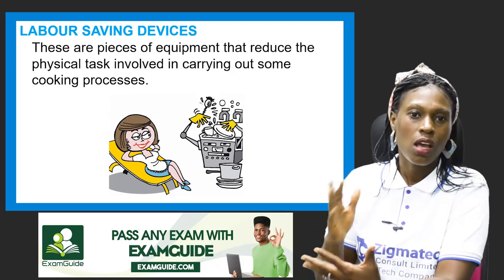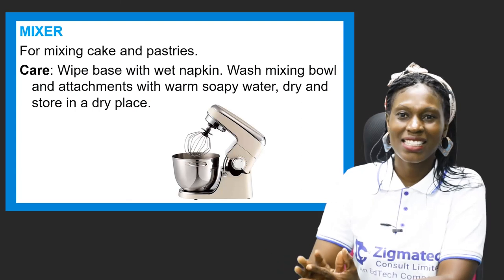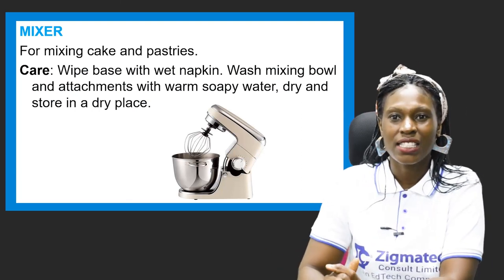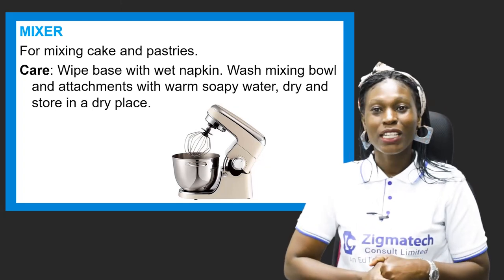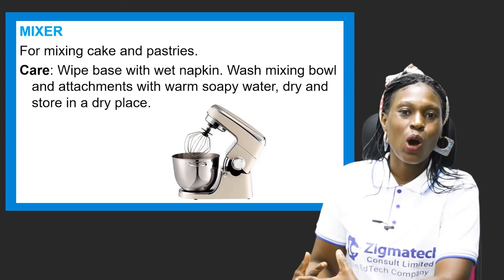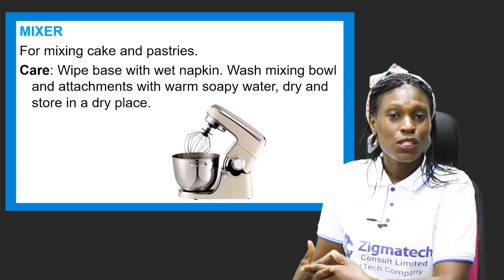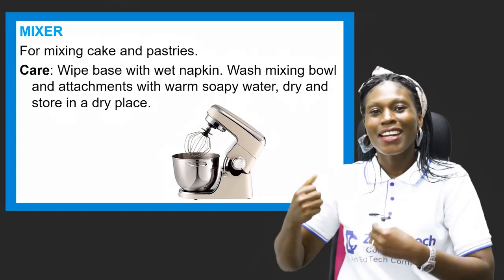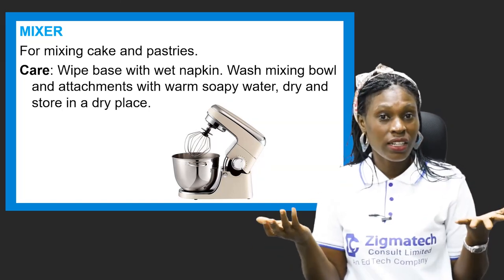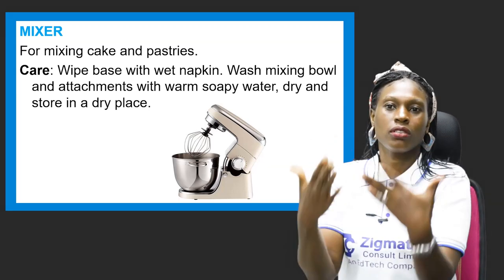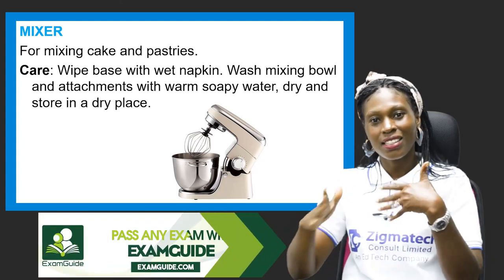One labor-saving device is the mixer, used for mixing cake and pastries. Before mixers existed, making cake required a lot of manual effort — turning and turning by hand. Now with a mixer, you just put your ingredients in, and as long as there's electricity, it keeps going. Now, how do you take care of your mixer? Wipe the base with a wet napkin, wash the mixing bowl and attachments with warm soapy water, then dry them and store in a dry place.